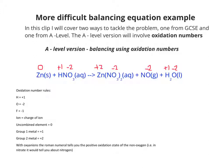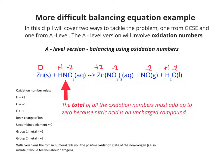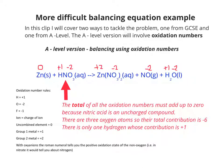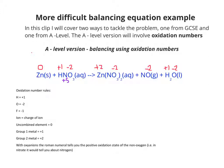So let's now do the nitrogen. Now, in HNO3, the total of all the oxidation numbers must add up to zero because nitric acid is an uncharged compound. So there's three oxygen atoms, so the total contribution is minus six, minus two for each individual one. There's only one hydrogen whose contribution is plus one. That's a deficit of plus five. That's where the nitrogen comes in. So now the nitric acid has a total oxidation number of zero.